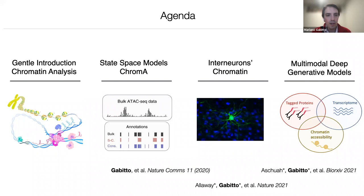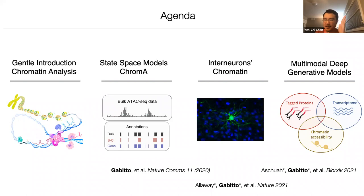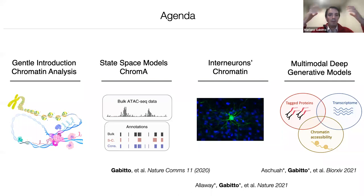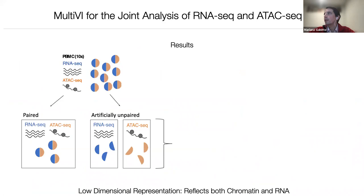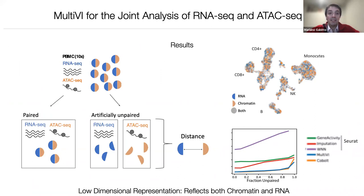Abel asks how the beautiful low-dimensional visualizations are generated from what is originally high-dimensional data. We typically build low-dimensional representations in 10 to 20 dimensions, and then use t-SNE or UMAP to collapse the information down to two dimensions for visualization.